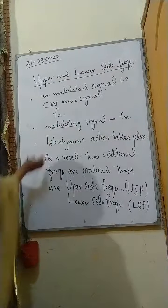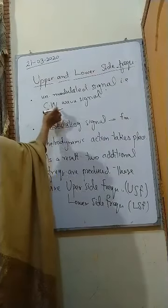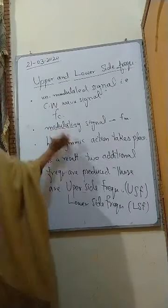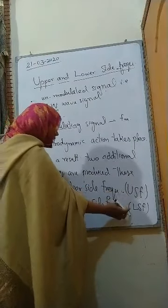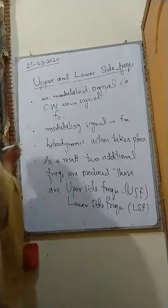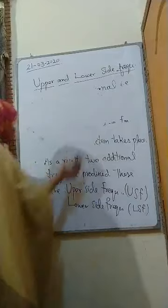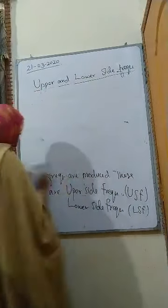So with the combination of these two waves — carrier waves and modulating waves — we have two frequency sides: one is the upper side frequency and the other is the lower side frequency. This amplitude modulated signal consists of three components.